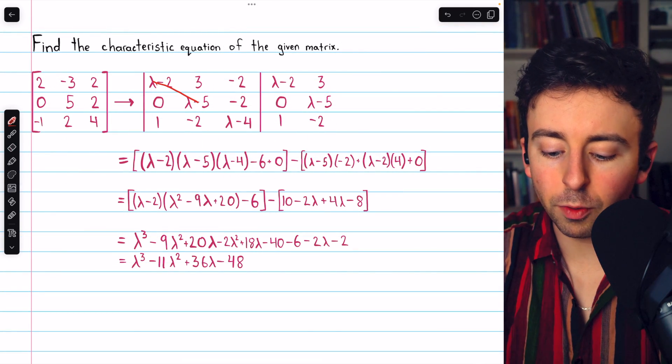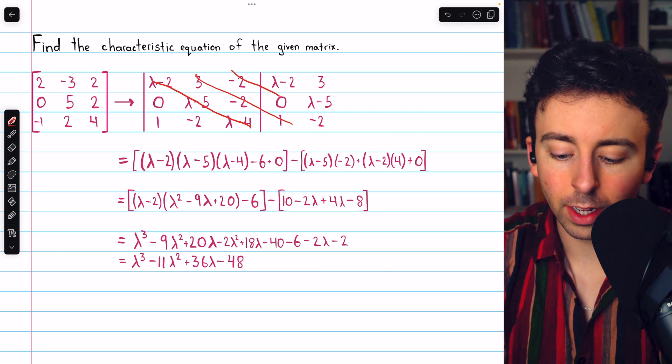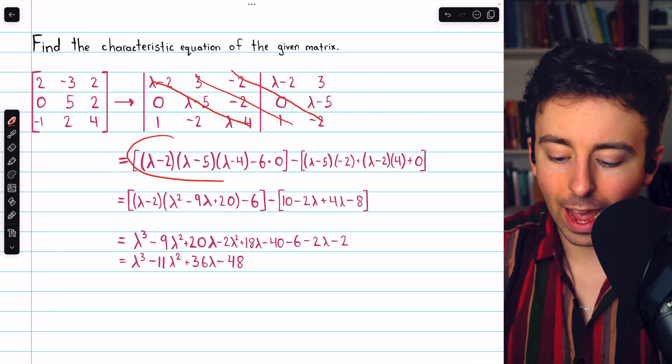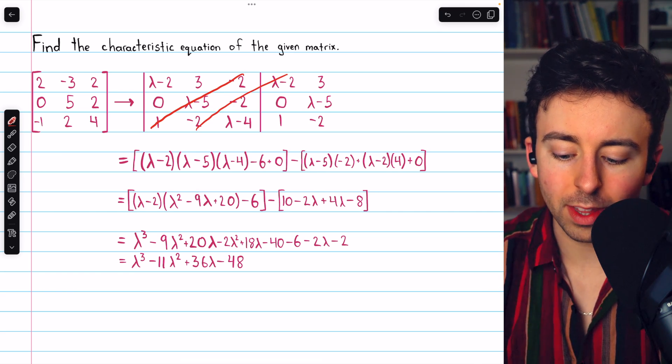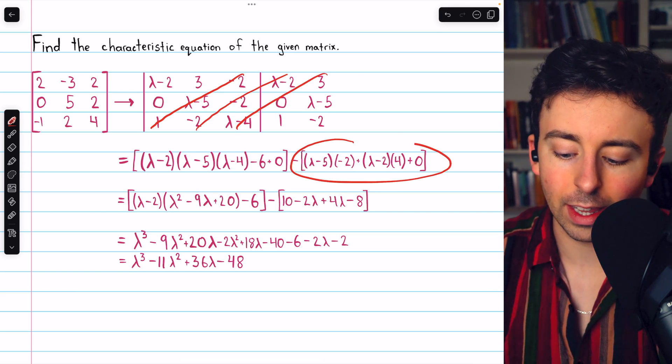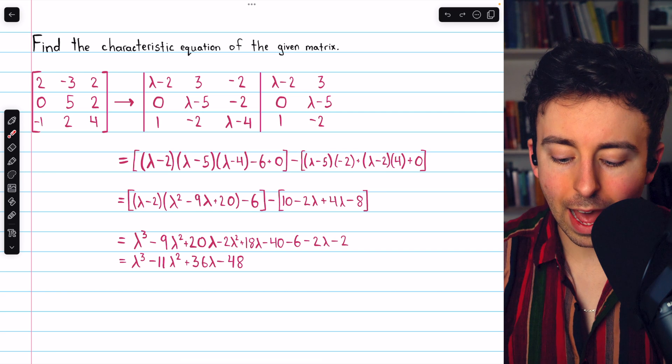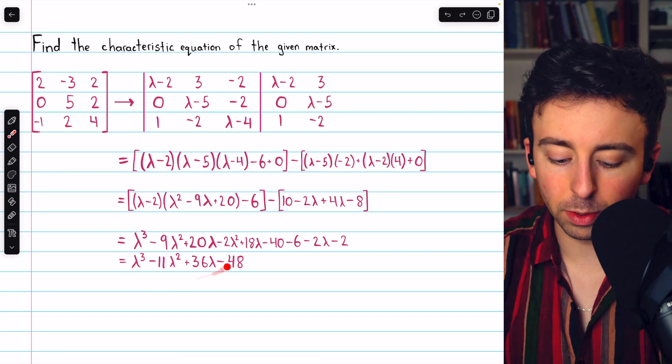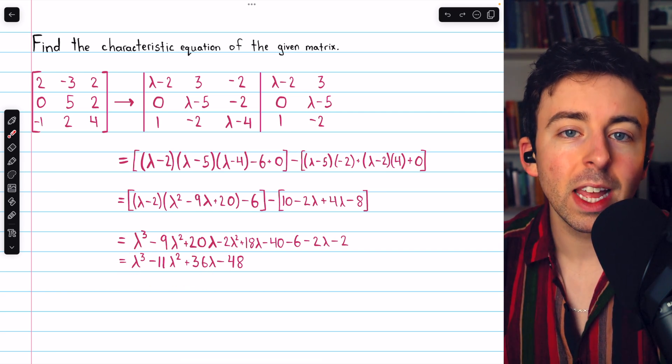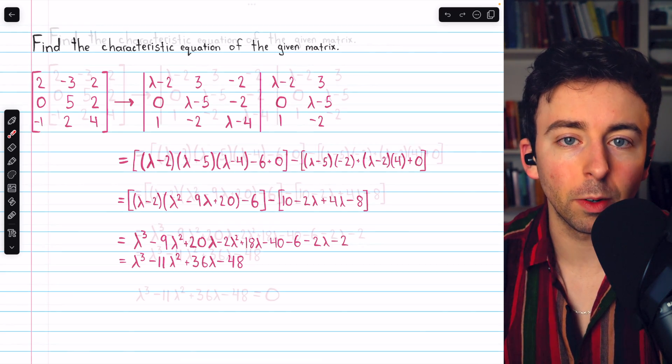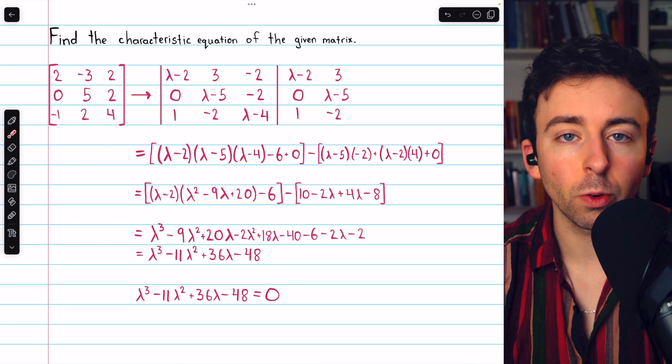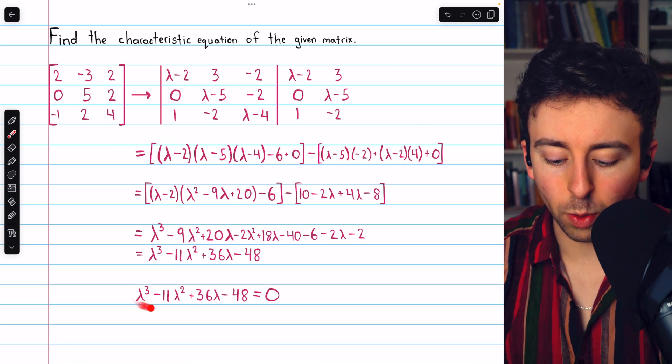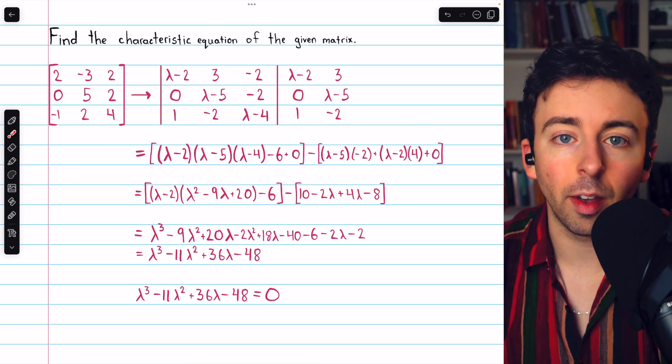We take the determinant as before with the diagonal trick. The rightward diagonals are added together, and then we subtract the products along the leftward diagonals seen there. Once we do all of the algebra, we end up here. This is our simplified characteristic polynomial. And then we'll set this equal to 0. And so that is the characteristic equation of this matrix. The solutions to this equation are the eigenvalues of the matrix.